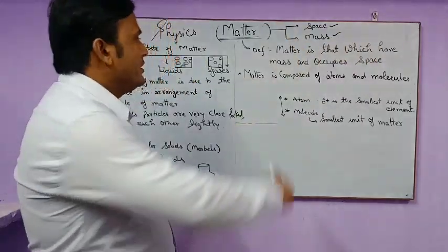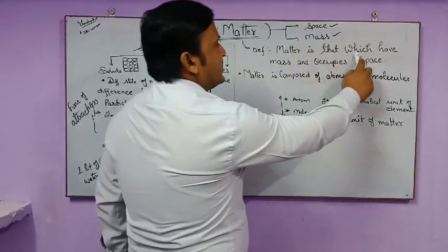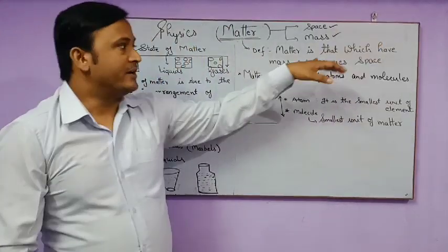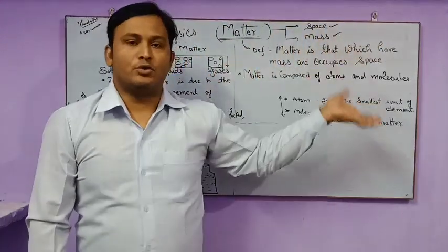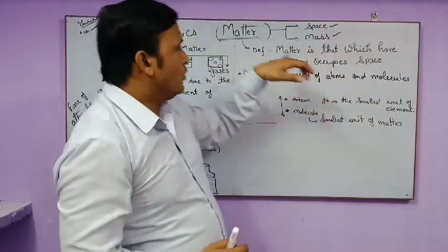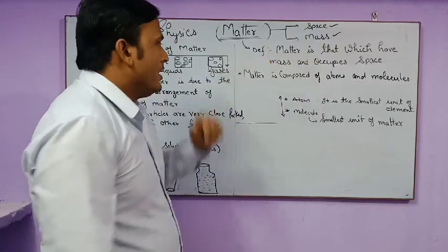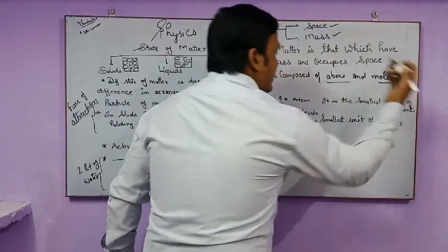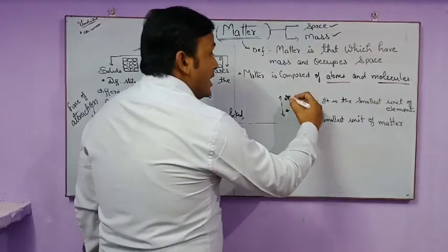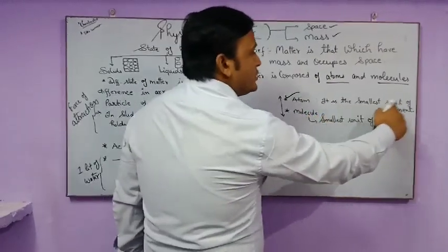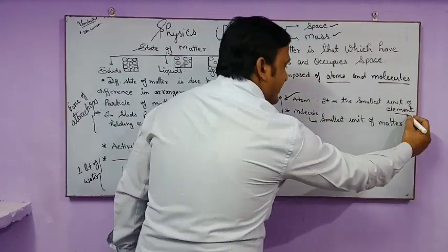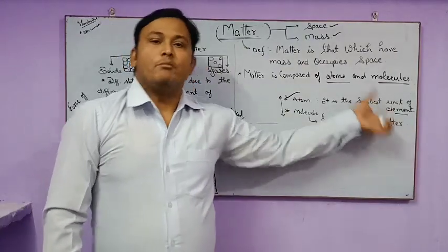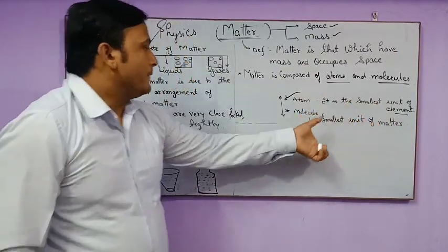By definition, matter is that which has mass and occupies space — that means the volume which comes into existence along with mass will be matter. Matter is composed of atoms and molecules. Atoms are the smallest unit of an element. Molecules are the smallest unit of matter.